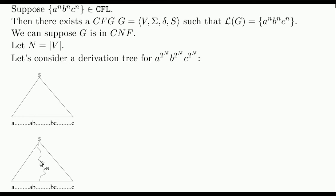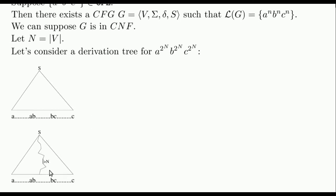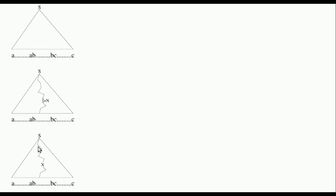Therefore, in this tree exists a path with length greater than N from the root to one of the leaves. Since N is the number of different variables in G, we can conclude that there exists a path from the root to a leaf where a variable is repeated. Say X.